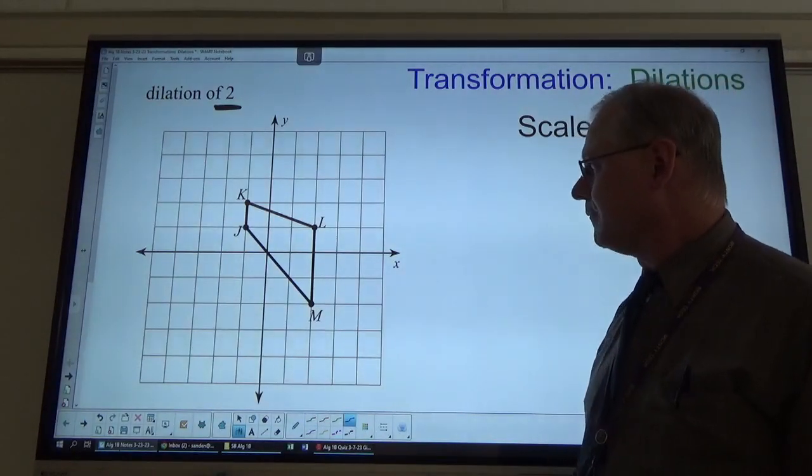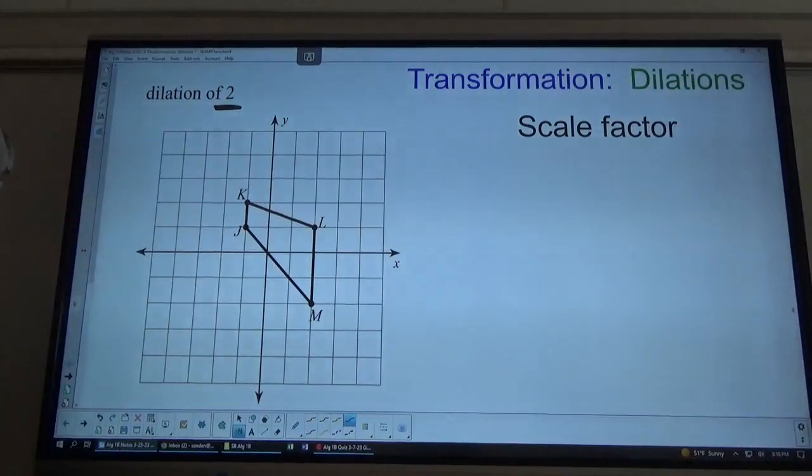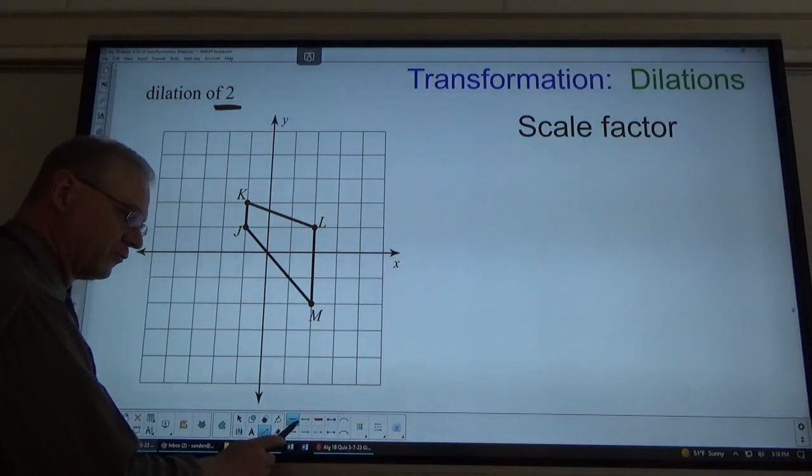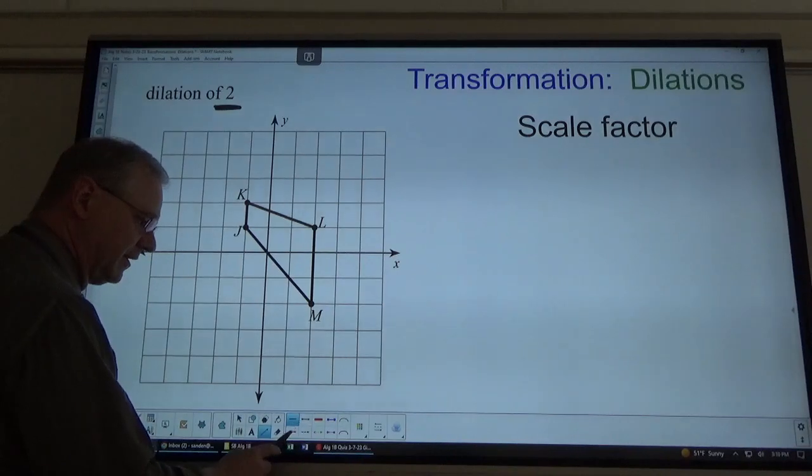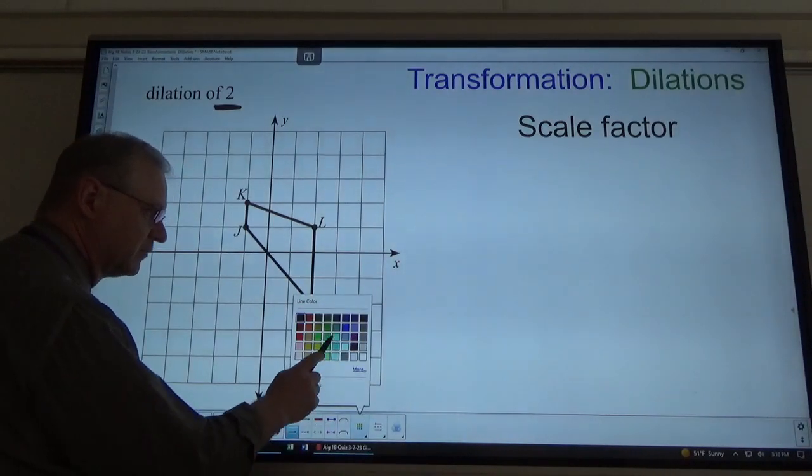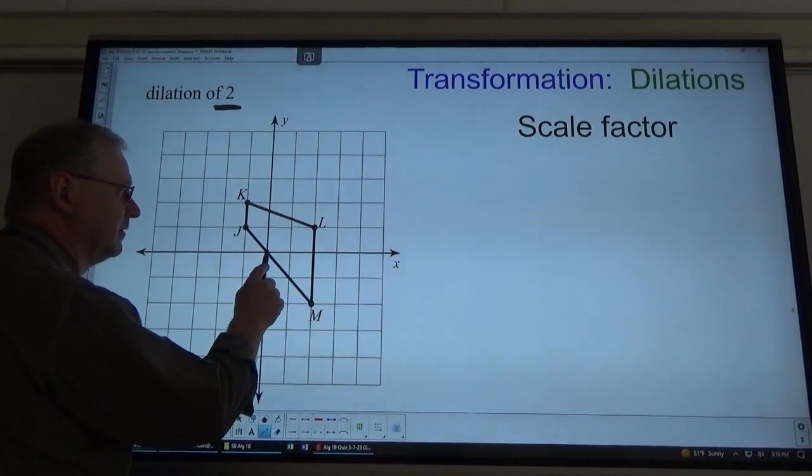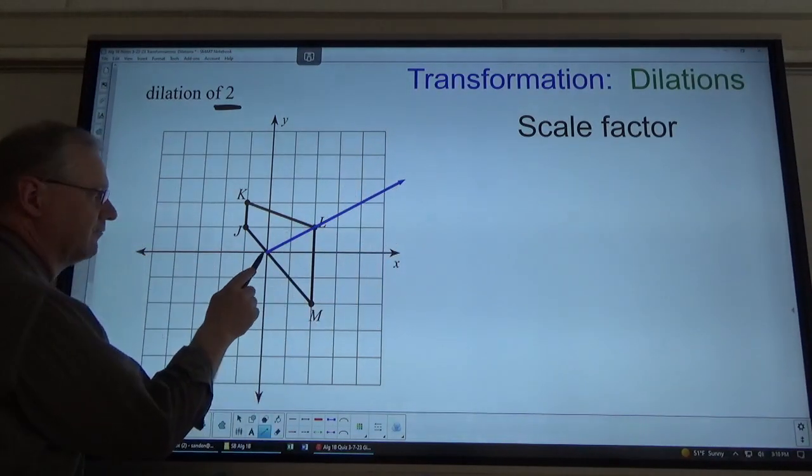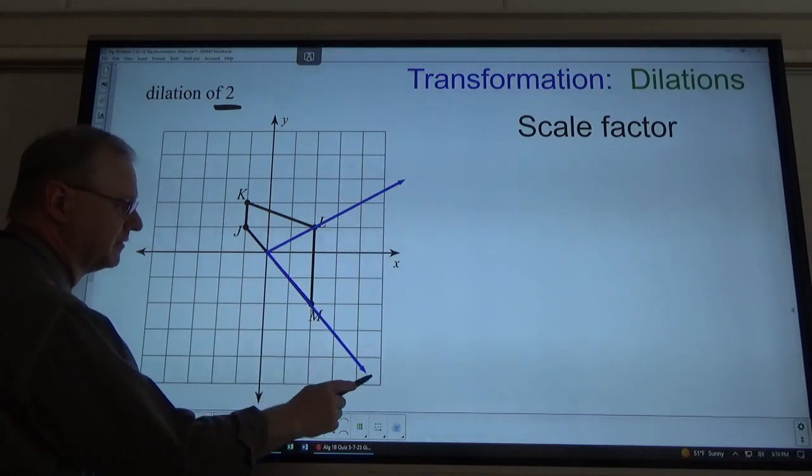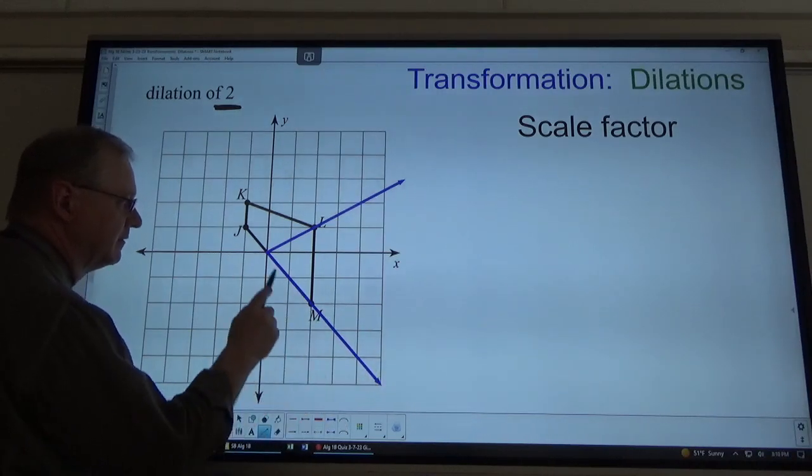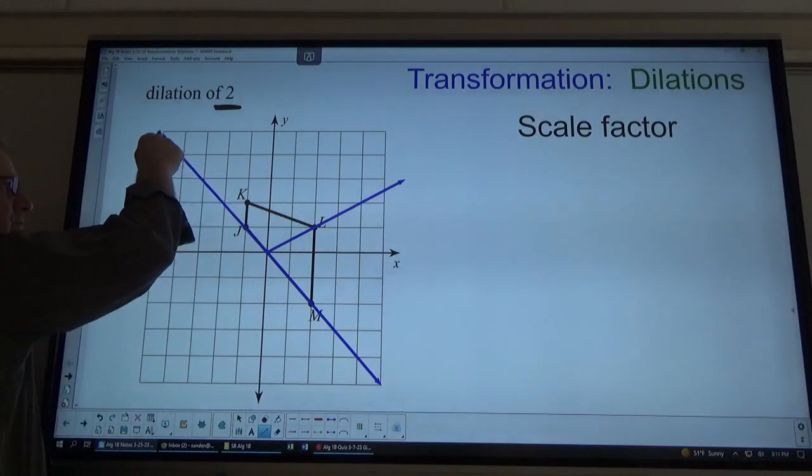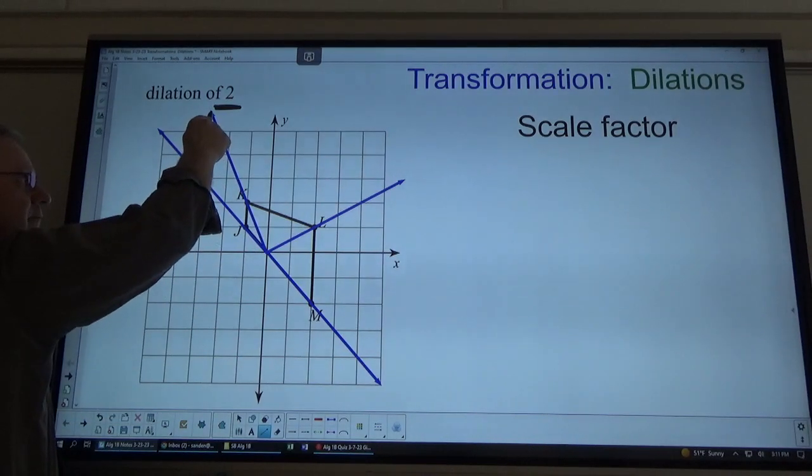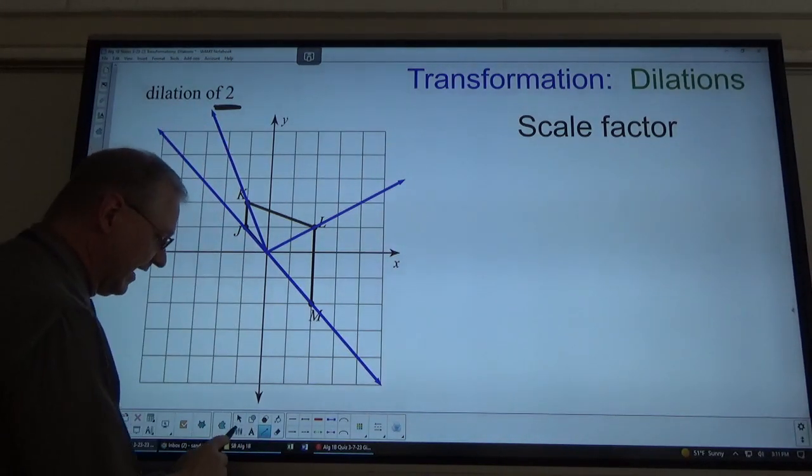So, one way to go about it is to draw lines from the origin straight out away from the origin through each of the points. If I were to do that here, that would be one of the rays. This is another ray. One out this way. And one out this way.